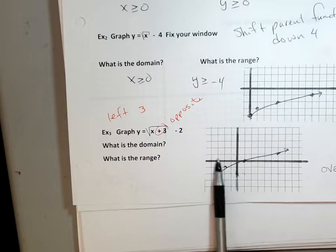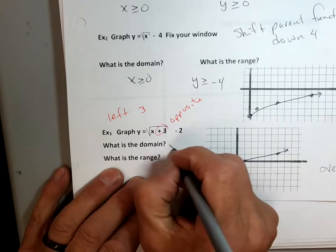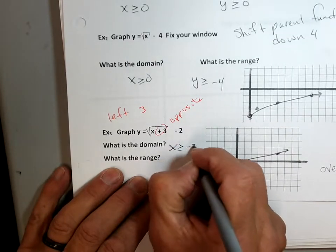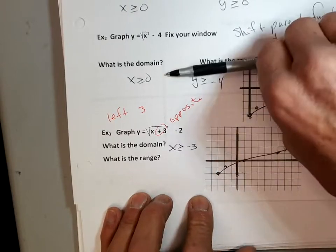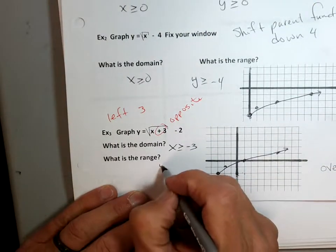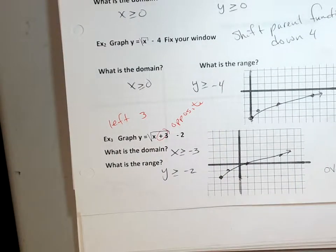Domain starts at negative 3, doesn't it? x values. x value starts at negative 3 and goes over. So domain is x is greater than or equal to negative 3. Range has a height, height of negative 2 and goes up, right? Reach for your range. y is greater than or equal to negative 2. OK, thumbs up. That's pretty easy.